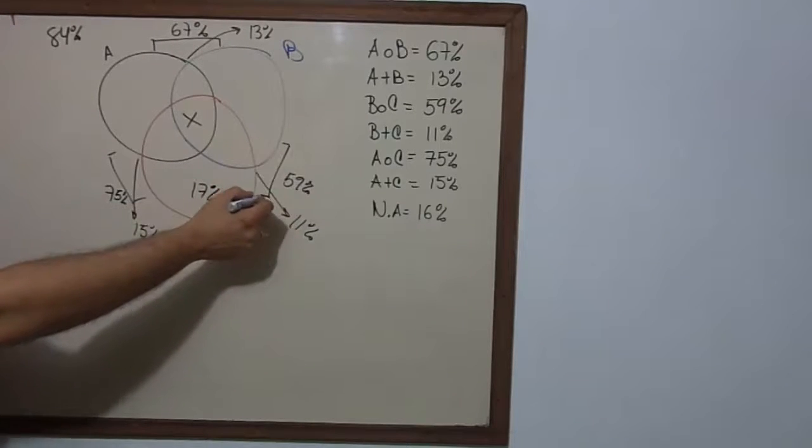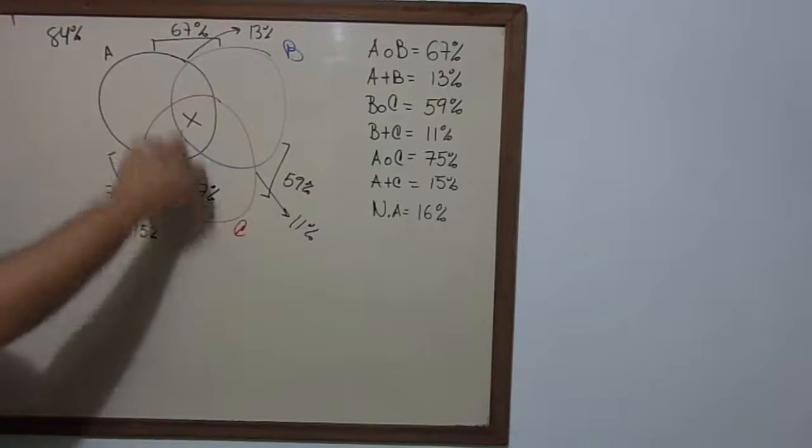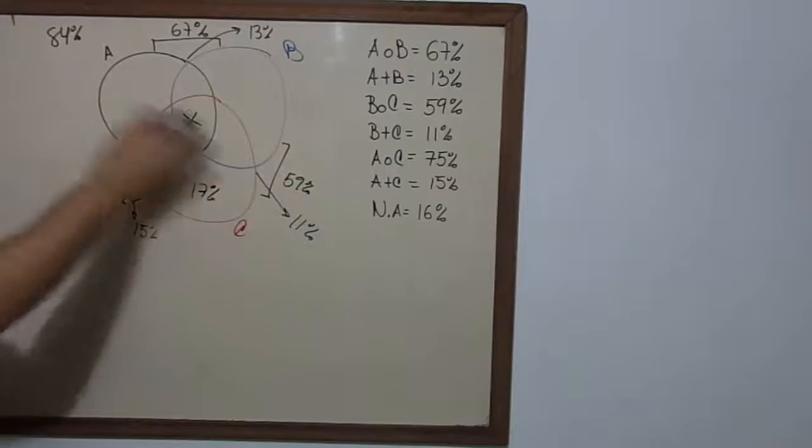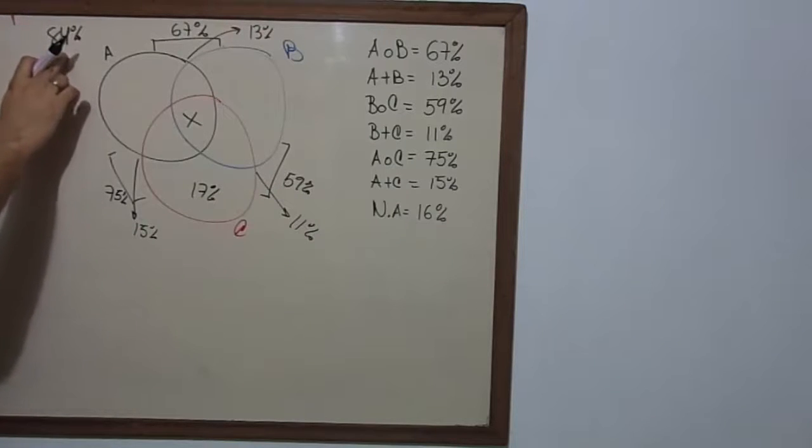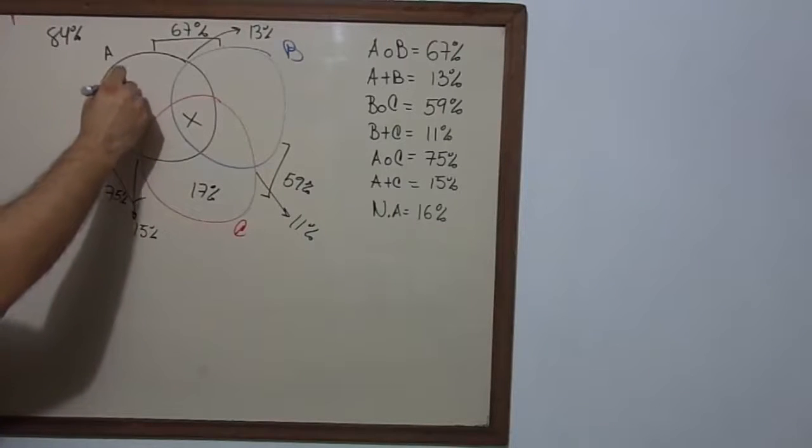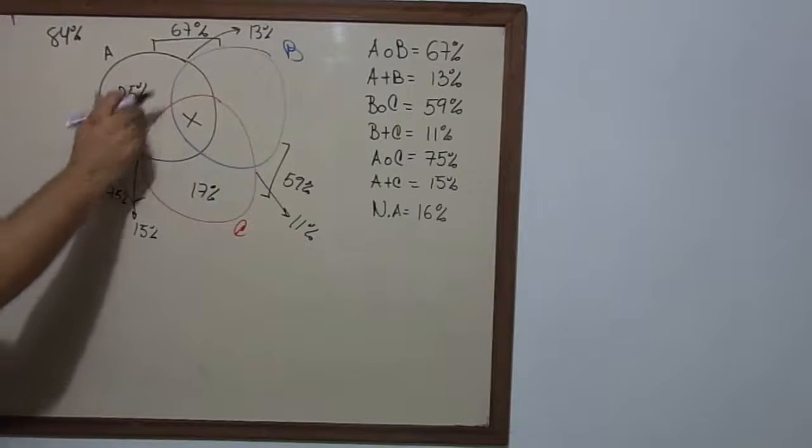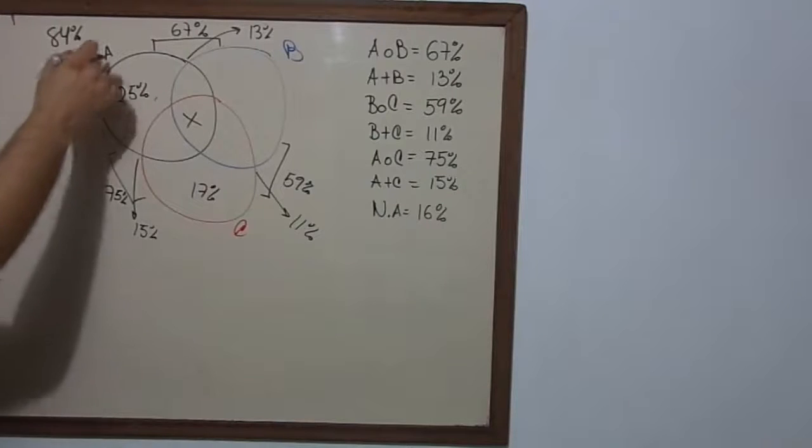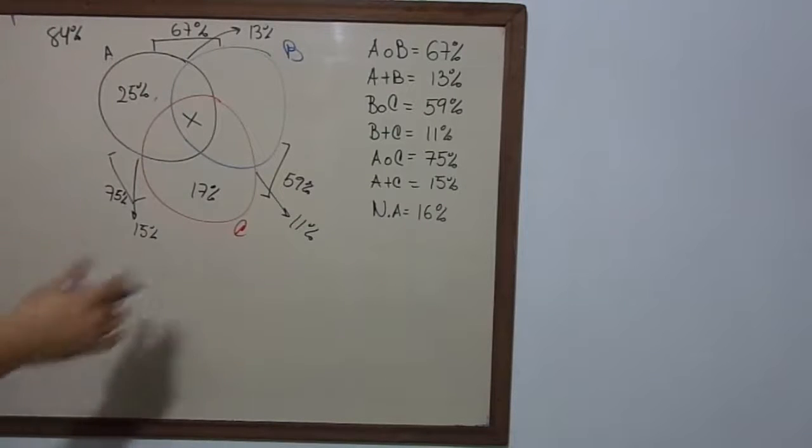You know that this is 59%, the red and the blue one. So if we take 59% out of 84%, you get 25%, which is the value of this zone. The people who only drink soda type A or brand A, whatever you want to call it.